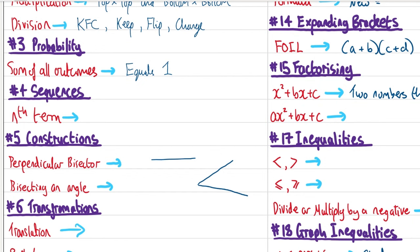Introduction to sequences. To find the nth term, we need to first find the difference between the terms. We multiply that by n and then we add on the zeroth term — the term which would be at the start of the sequence if there was another term prior.